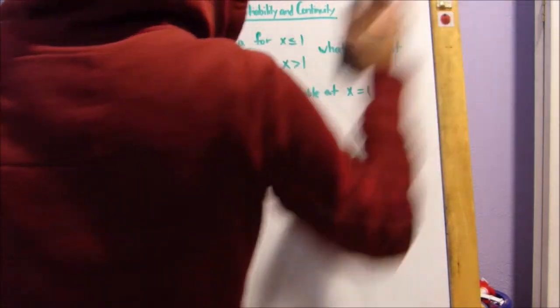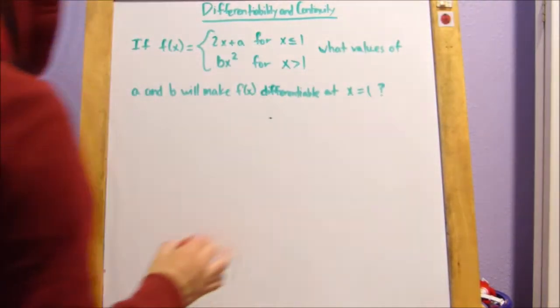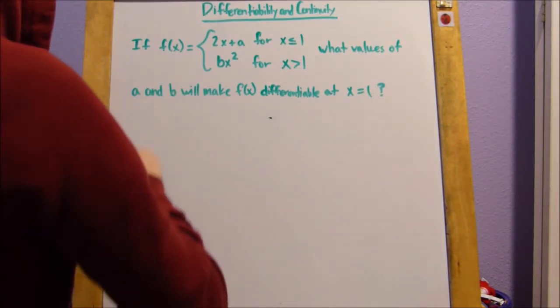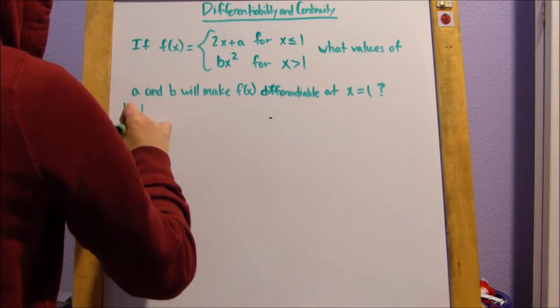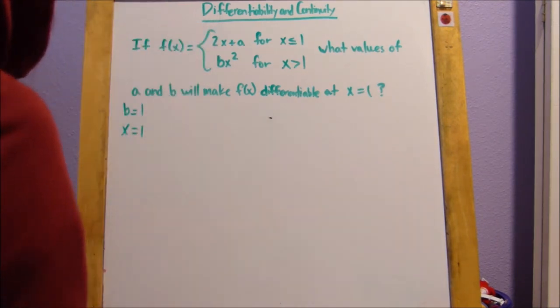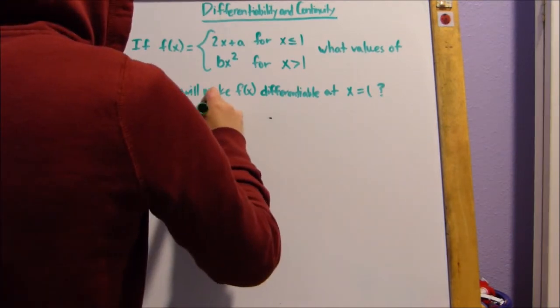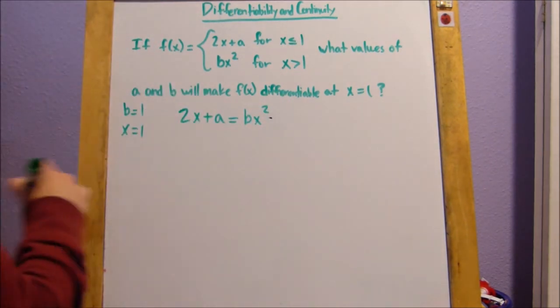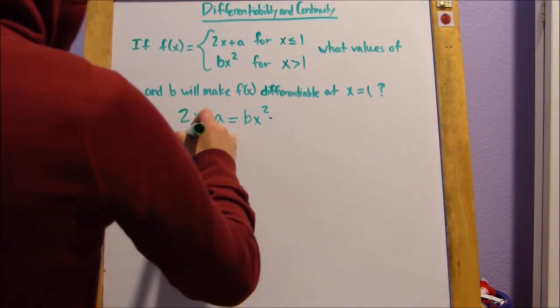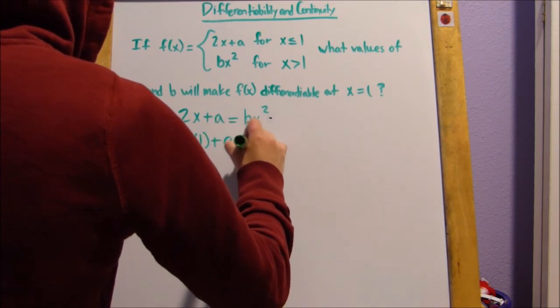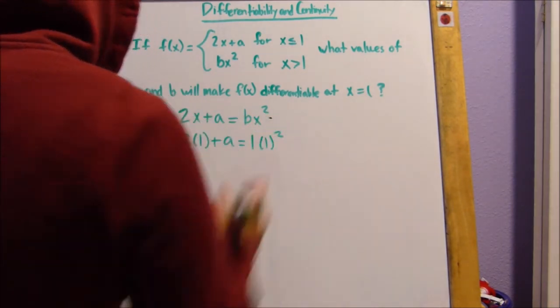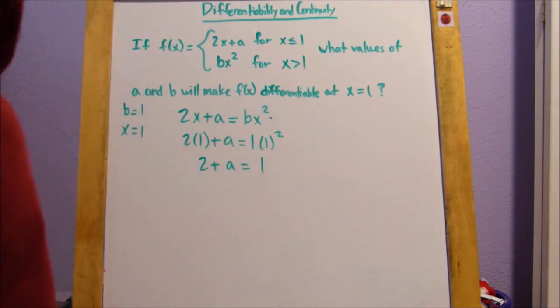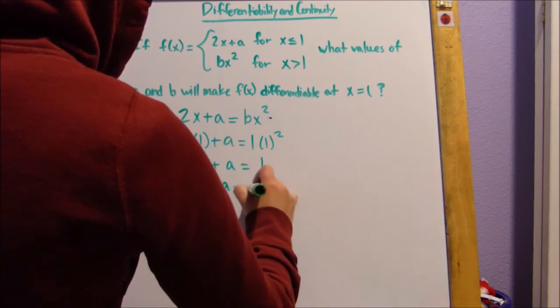Now, using the rule that if something is differentiable, it must be continuous, we're going to plug in our newfound information into these equations. So, we're going to do the same thing, only this time we're not going to take the derivative of it, but we're still going to set it equal to each other. So, if our x is 1, so 2 times 1 plus a equals 1 times 1 squared, we end up getting 2 plus a equals 1, and we end up getting a equals negative 1.